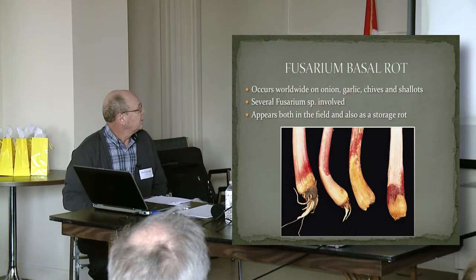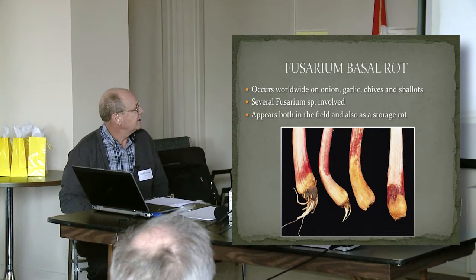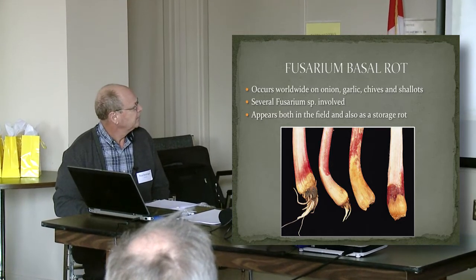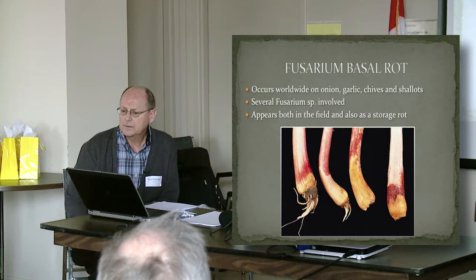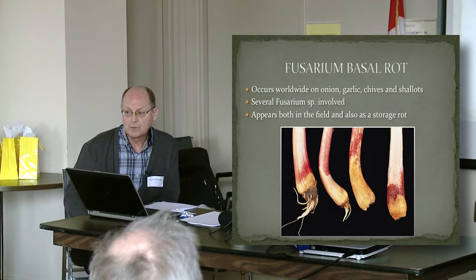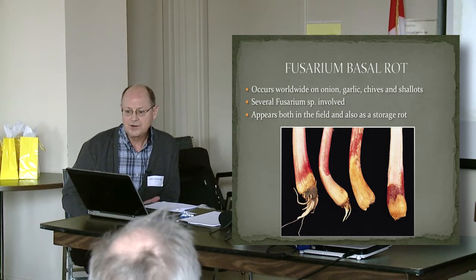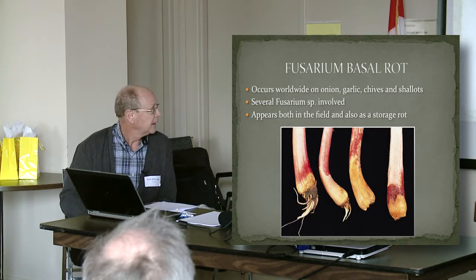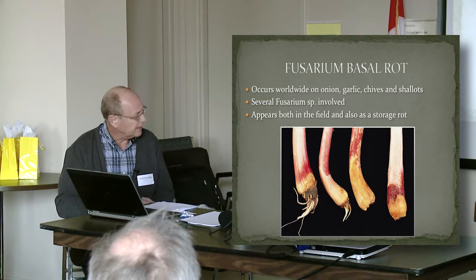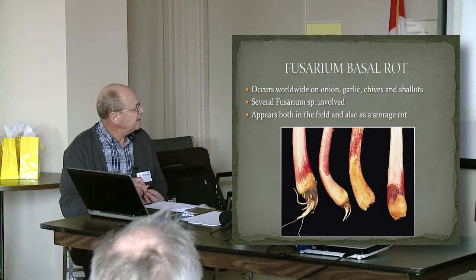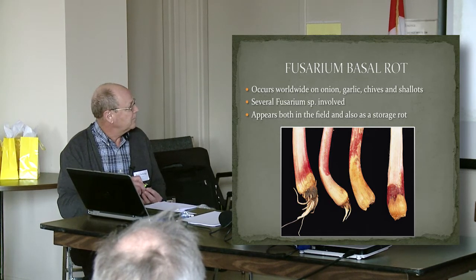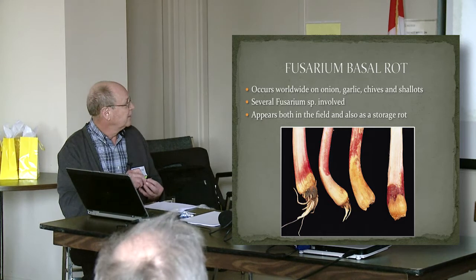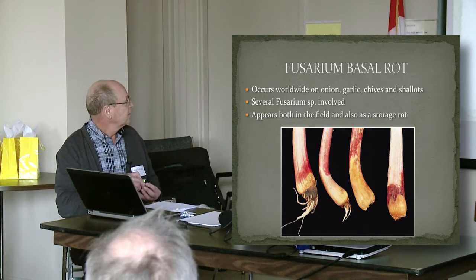The key thing about fusarium basal rot is it occurs especially in wet fields, and it enjoys very warm temperatures. It causes a decay of the basal plate area of both onion and garlic, as you can see here, and then it moves up into the stem. This is a more severe infection; these are less so.